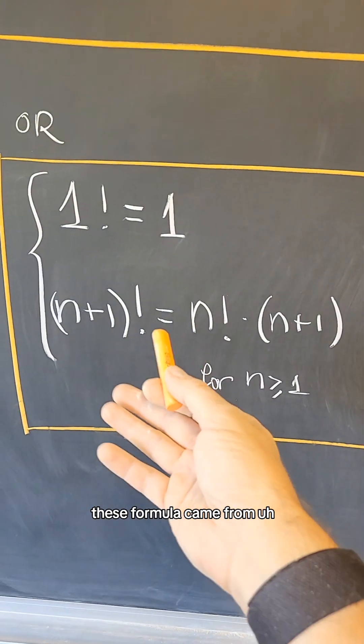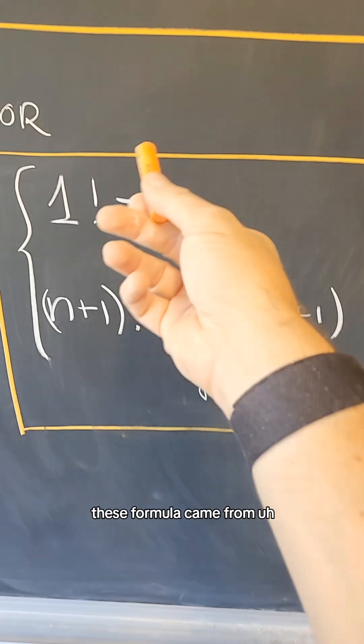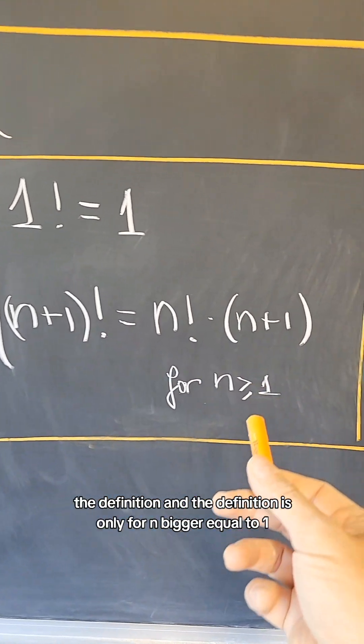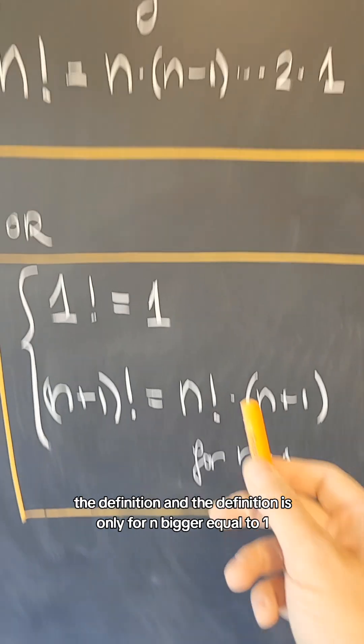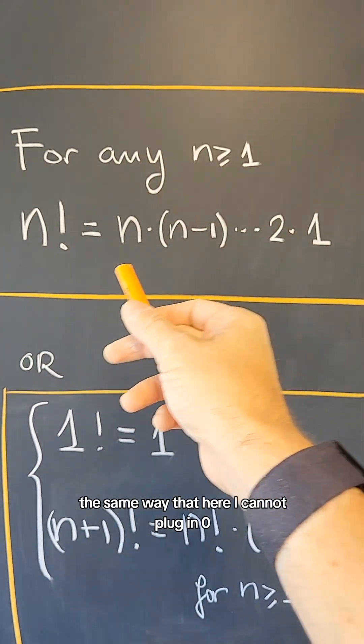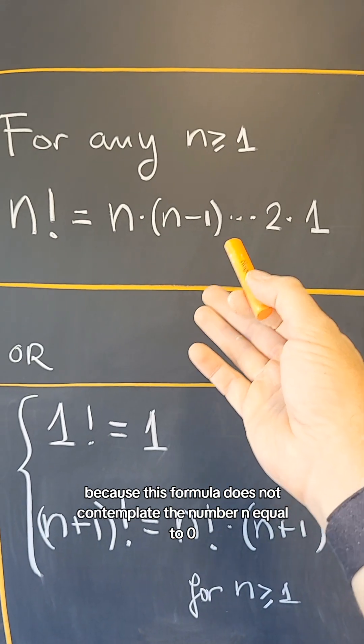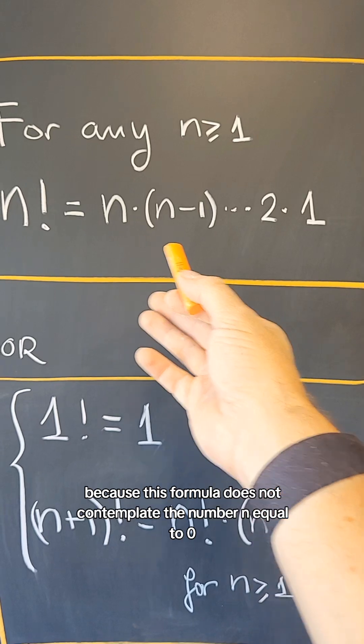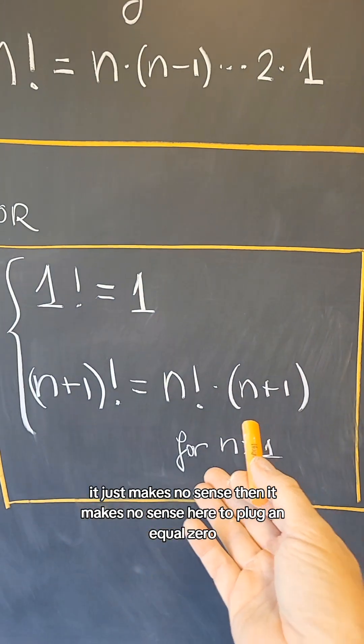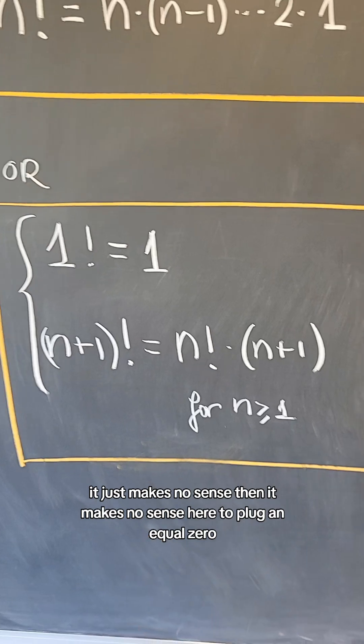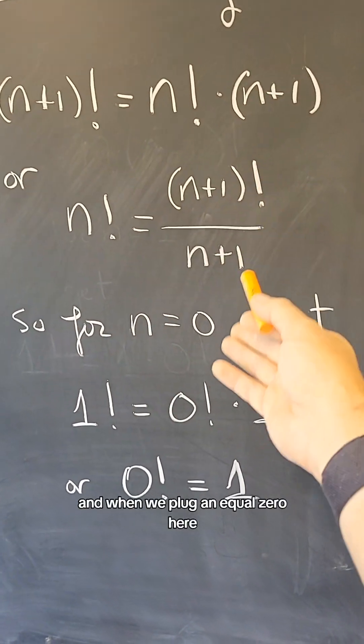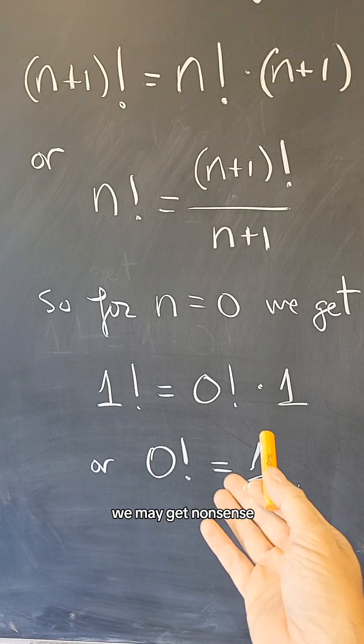So this formula came from the definition and the definition is only for n bigger or equal to 1. The same way that here I cannot plug in 0 because this formula does not contemplate the number n equal to 0. It just makes no sense. Then it makes no sense here to plug n equals 0. And when we plug n equals 0 here, we may get nonsense.